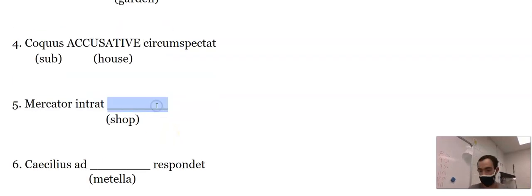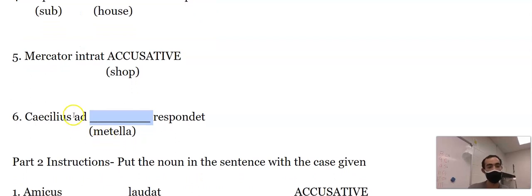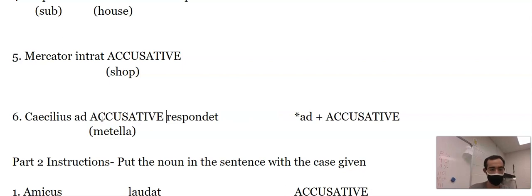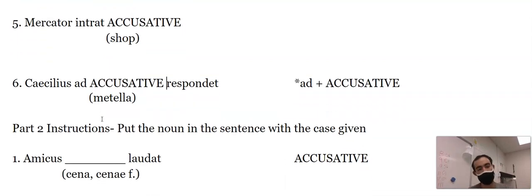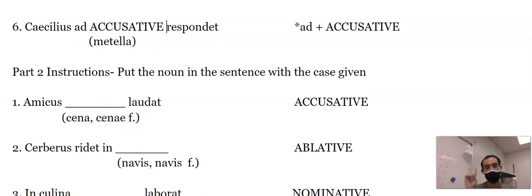Mercator intrat shop. Intrat is a verb. This would have to be accusative because a merchant has to enter a place. That is an accusative direct object, shop, tabernam. Caecilius, ad. This is a weird word, ad, and I'll make a note here, 'plus accusative.' That's also in our study guide. So that would be 'ad Metellum.' He responds to Metellum. Part two.